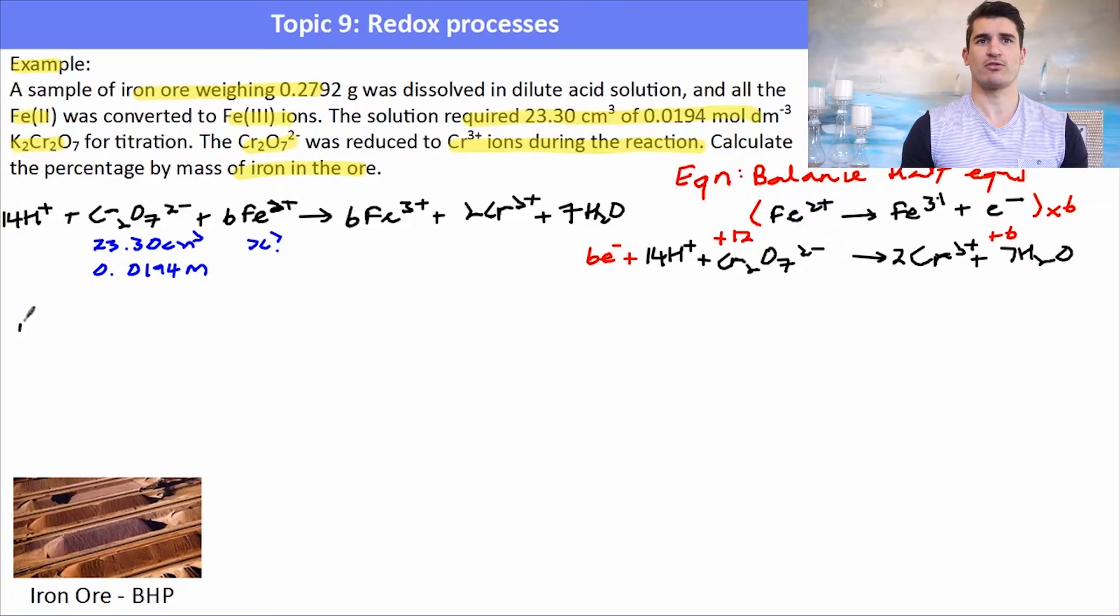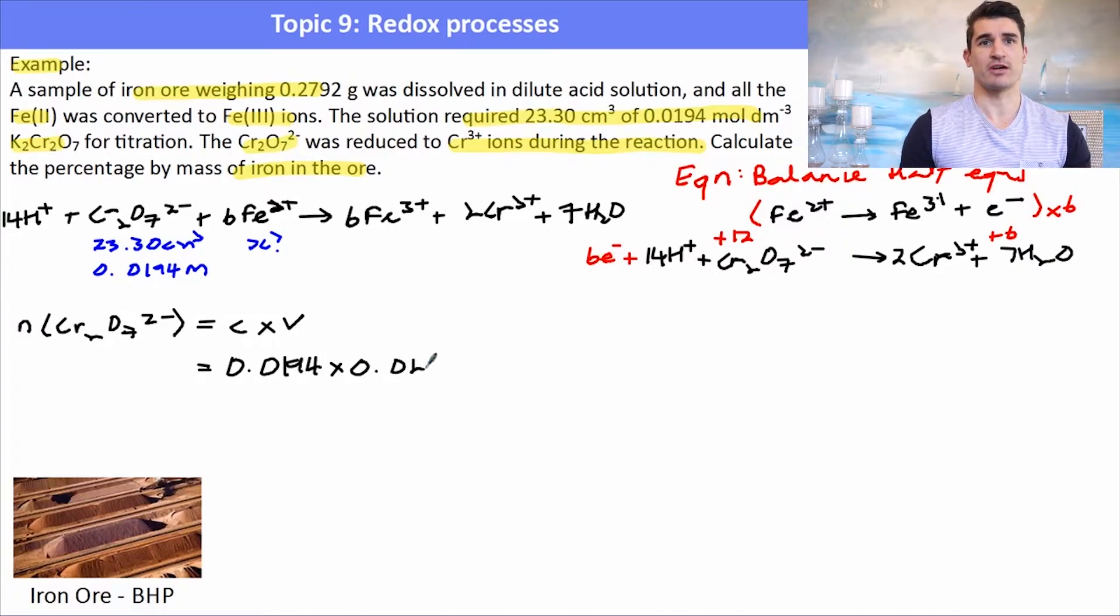So I can work out the number of moles of the dichromate and then that will allow me to work out the number of moles of the ion. So the number of moles of dichromate, remembering the formula for solutions, n equals C times V where V must be in decimeters cubed. Don't forget to change it to decimeters cubed. So doing that calculation I can work out the number of moles of the dichromate that reacted with the ion in the sample. So we have 4.52 times 10 to the negative 4 moles of the dichromate.